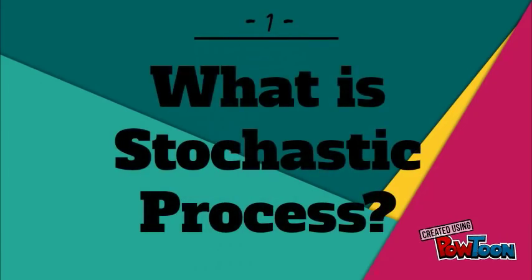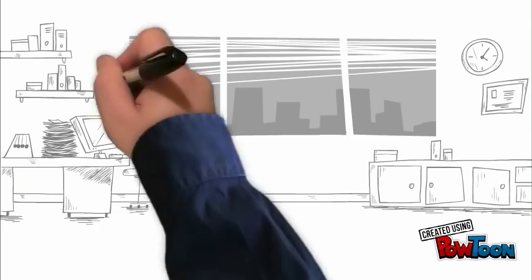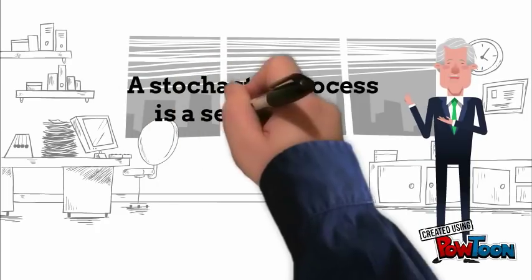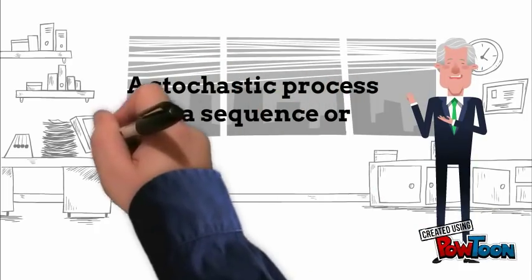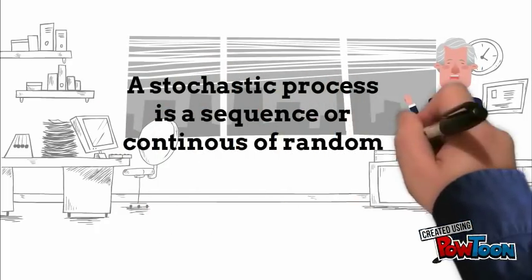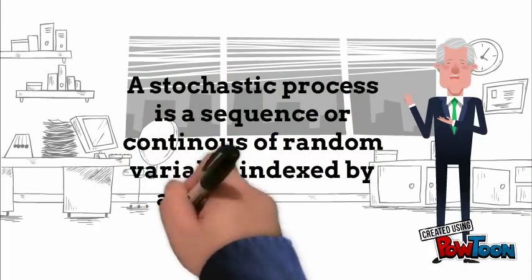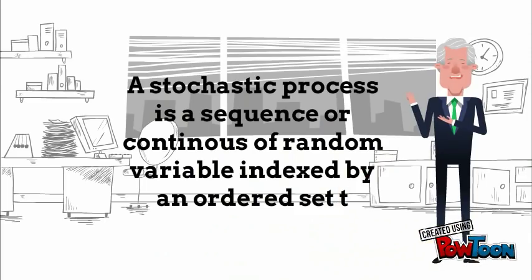What is a stochastic process? A stochastic process is a sequence or collection of random variables indexed by an ordered set T.